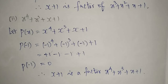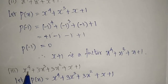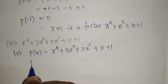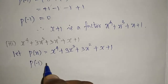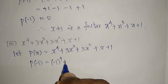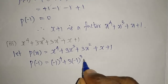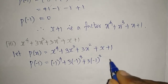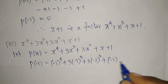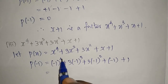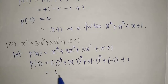Now the third one: x⁴ + 3x³ + 3x² + x + 1. I take the given polynomial as p(x) and substitute x = -1. So p(-1) = (-1)⁴ + 3(-1)³ + 3(-1)² + (-1) + 1. The power 4 is even so we get +1, and we proceed to simplify.